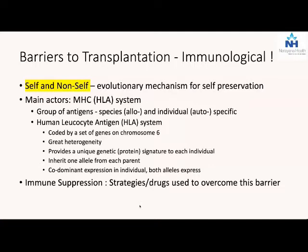Because our body over millennia has evolved a mechanism for self preservation, wherein our immune system recognizes what is us and what is not us - it recognizes self and non-self. That is a fundamental of our immune system, vital for our survival. The main actors of this as far as transplantation is concerned - what helps recognize self and non-self - is what is called the major histocompatibility complex. In humans, it is called the HLA or human leukocyte antigen system.